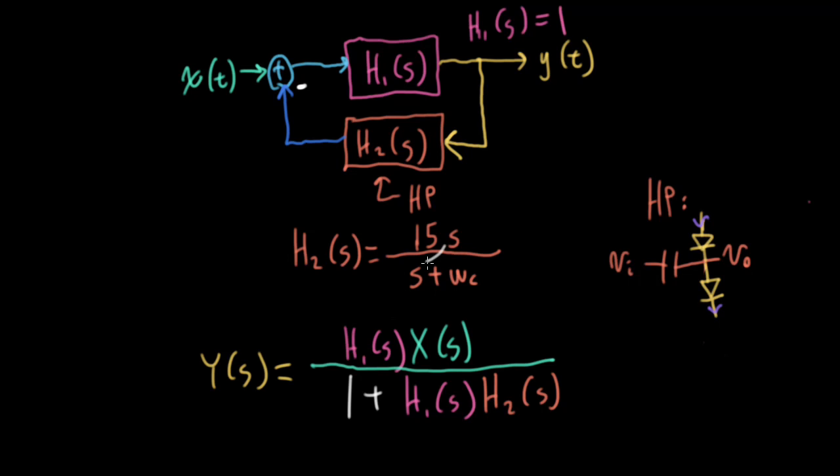So in this particular case, h1 is basically a straight line. h1 is one, so I can just erase the h1s. And for h2, I could write 15s over s plus omega-c. Let's see. Let me try to make this look more like a 5, and this look more like an omega. All right.